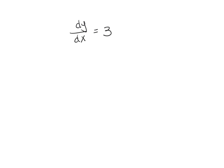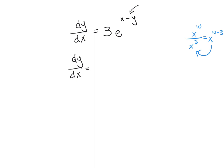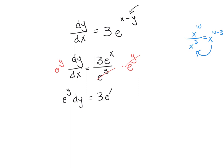Here is our last example: dy over dx equals 3e to the power of x minus y. How do we separate when both variables are in the exponent? Using properties of exponents — just as x to the 10th over x to the 3rd equals x to the 10 minus 3 — we can rewrite this as dy over dx equals 3e to the x over e to the y. Now multiply both sides by e to the y and by dx, giving e to the y dy equals 3e to the x dx.